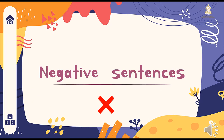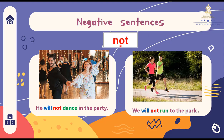Now we are going to make negative sentences. Ahora vamos a hacer oraciones negativas. Let's pay attention. We need the word 'not' to make negative sentences. Para hacer oraciones negativas necesitamos 'not'. For example: He will not dance in the party. Él no bailará en la fiesta. We place 'not' between the auxiliary will and the verb — between will and dance.